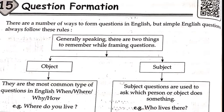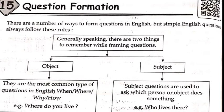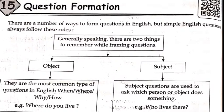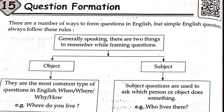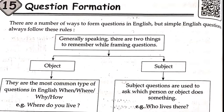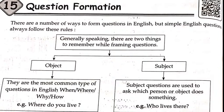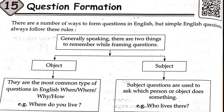Question Formation: There are a number of ways to form a question in English, but simple English questions always follow these rules. Generally speaking, there are two things to remember while framing a question. First is Object and second is Subject. The most common type of questions in English use: when, where, why, how.